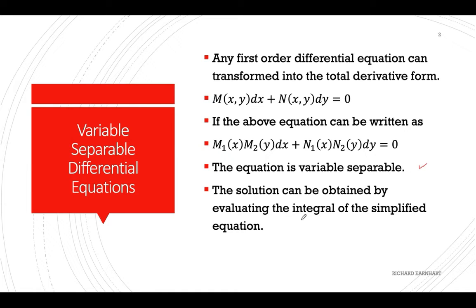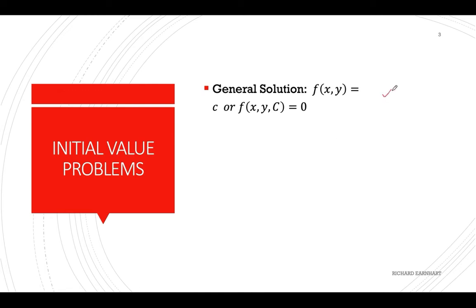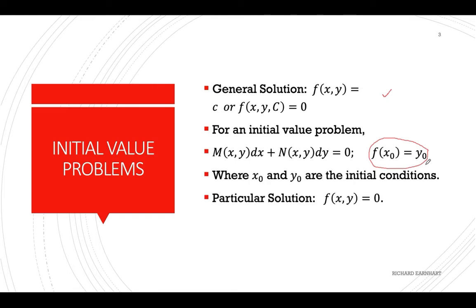The solution can be obtained by evaluating the integral of the simplified function. For an initial value problem, if the general solution is a function of x, y, and arbitrary constant c, and the equation is associated with initial conditions x-sub-0 and y-sub-0, the solution is called the particular solution. Substituting the initial conditions into the general solution lets you compute the value of c, and substituting c back gives the particular solution.